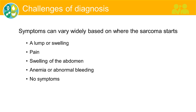When thinking about whether a patient may have a sarcoma, what should you be looking for? Certainly somebody who has a lump or swelling — though not every lump or swelling is a sarcoma. Concerning features include something that grows over time, particularly rapidly, or if there's pain associated with it. Some sarcomas arise in the abdomen, causing swelling or issues with eating. Sometimes patients present with anemia or abnormal bleeding, particularly if sarcomas are within the abdomen or involving the uterus. But some patients will have no symptoms at all and may be found incidentally during testing for something else.